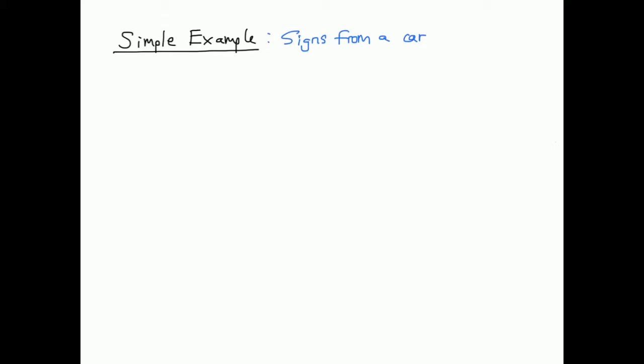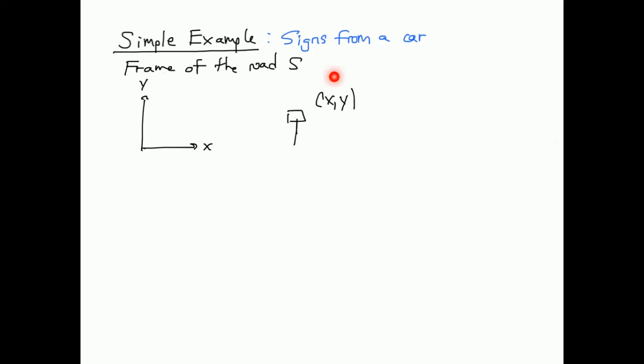Let's do a simple example to illustrate what I mean by a frame. The example is observing signs from a moving car. The first frame we have is the frame of the road — this is the frame that the sign is stationary in. I'll give a coordinate system for this: X and Y. The frame is called S — this is just a convention from the book, sometimes called O in other textbooks. Here's my sign, located at some position x, y in frame S.